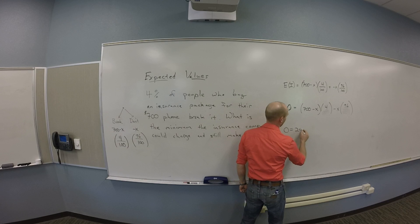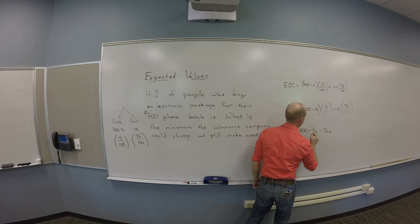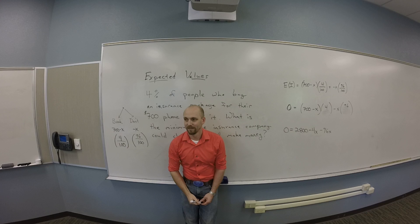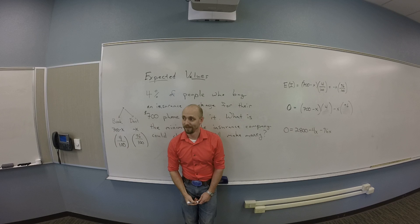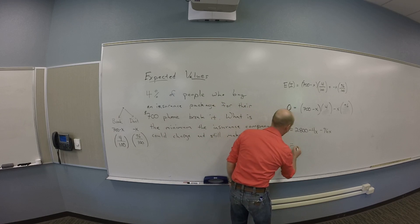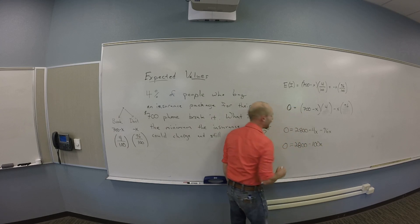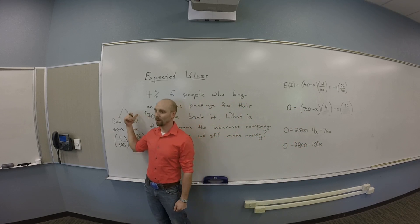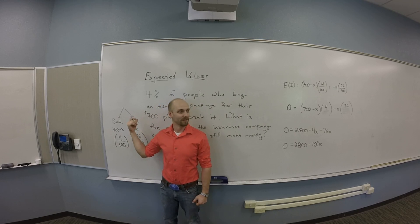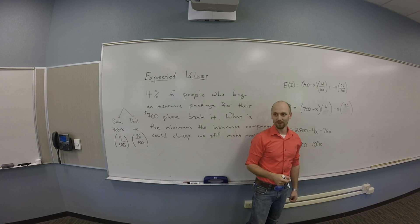And then we'll distribute through maybe a little bit. So I'll get zero is something like 2,800 minus 4X minus 96X. I like how it popped out to be minus 100X. And of course it popped out to be minus 100X. Why did it pop out to be minus 100X? 100% of people are buying the plan. I'm assuming I started this from a perspective of some guy who bought the plan. So 100% of the time that guy bought the plan. He spent his X.